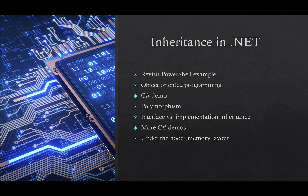I'm going to start by briefly revisiting that PowerShell example — I'll include a link to the original video in the description. Then I'm going to talk conceptually about what inheritance means in the context of object-oriented programming. Then we'll go into a simple C# demo, explain some more concepts like polymorphism, and the difference between abstract and virtual methods and interface types. Then we'll do more demos, and finally I'll give a quick peek under the hood of how this all works — how objects are represented in memory and how virtual function calls actually work.